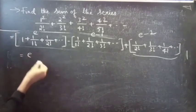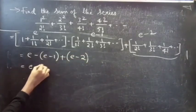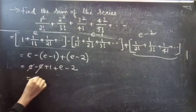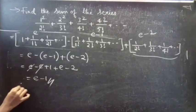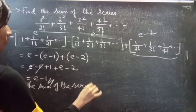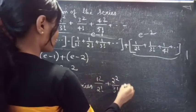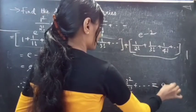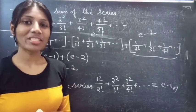Therefore the total sum equals e minus (e minus 1) plus (e minus 2). Simplifying: e minus e plus 1 plus e minus 2 equals e minus 1. So the sum of the series 1 squared by 2 factorial plus 2 squared by 3 factorial plus 3 squared by 4 factorial plus so on equals e minus 1. This completes the problem. We have seen a problem from exponential series. Hope you will understand. We will see you in the next video.